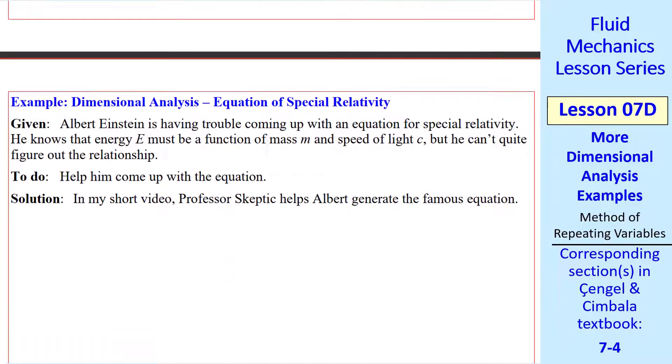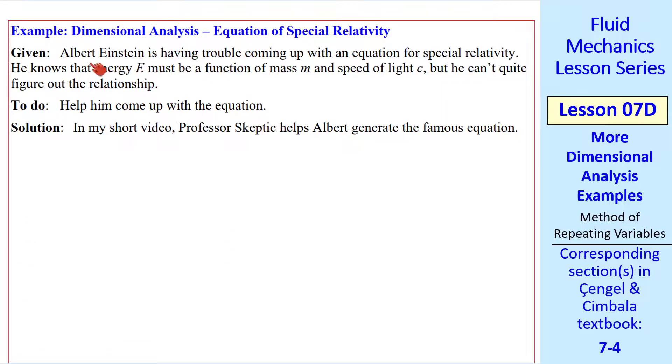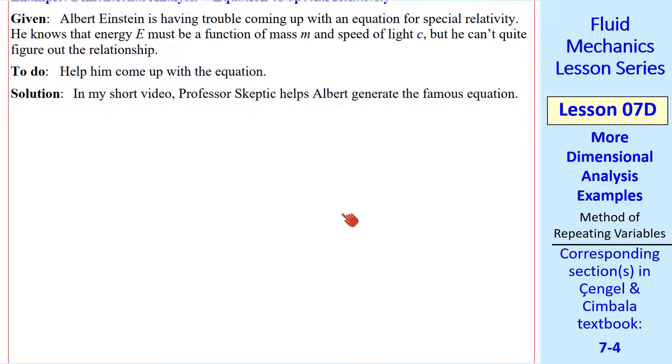For my third example, let's have a little bit of fun. Suppose Albert Einstein is having trouble coming up with his famous equation of special relativity. The only thing he knows is that energy is a function of mass and speed of light. But he can't figure out the relationship. Let's help him. I made a short video about this where Professor Skeptic helps Albert generate the famous equation. I'll show some clips from that here.